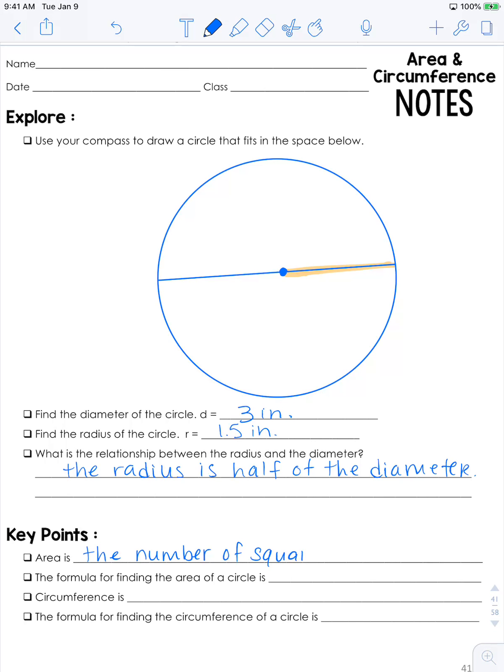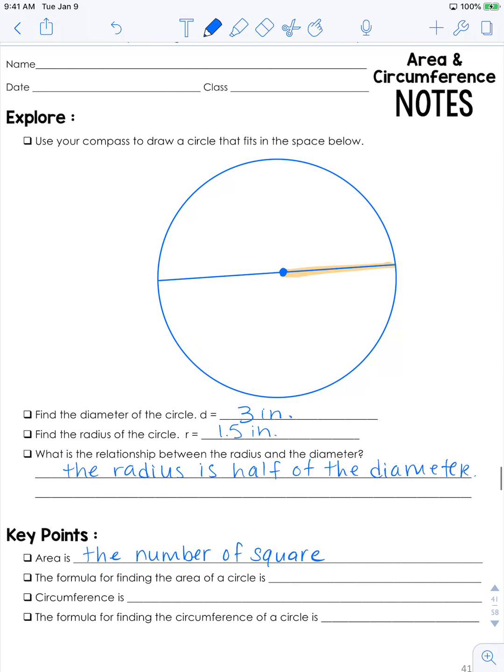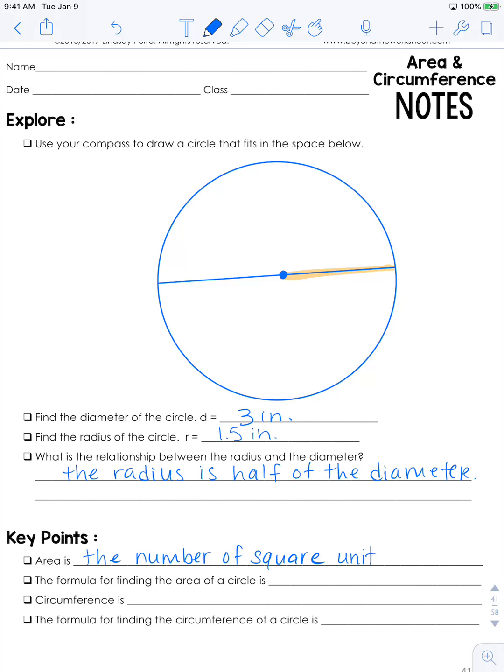Now area is going to look a little bit different in a circle because it's not a squared-off shape. So the formula for finding the area of a circle is A = πr².